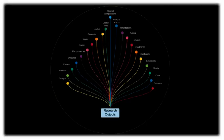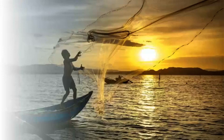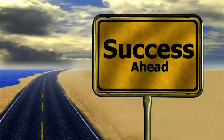The type and format of the data you will share will depend on your discipline. There is a wide spectrum of research outputs, from software and code to performances and music. Research data can be defined as any information that has been collected, observed, generated, or created to validate original research findings. So cast your net wide when considering what outputs from your project to share.